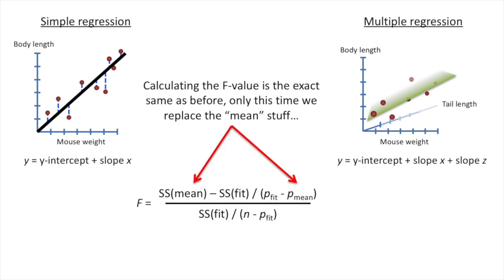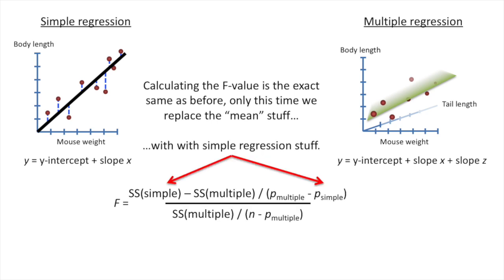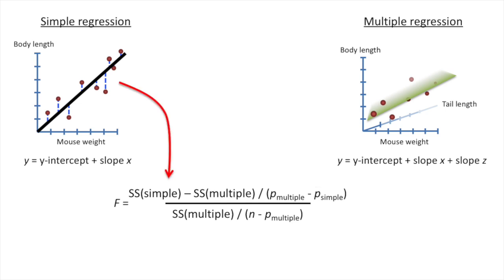Calculating the f-value is the exact same as before, only this time we replace the mean stuff with the simple regression stuff. So, instead of plugging in the sums of squares around the mean, we plug in the sums of squares around the simple regression. And instead of plugging in p-mean, we plug in p-simple, which equals the number of parameters in the simple regression. That's two.